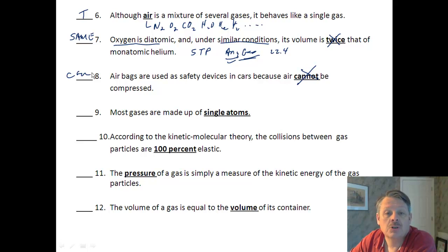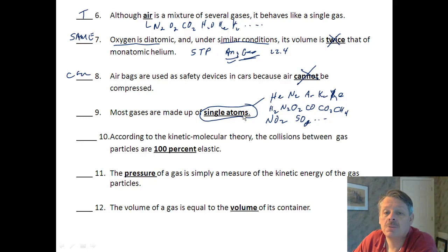Most gases—number nine—most gases are made up of single atoms. Well, that's certainly true. There are some gases made up of single atoms like helium, neon, argon, krypton, and xenon. That's five. Everything else are molecules. You've got H2, N2, O2, carbon monoxide, carbon dioxide, methane gas CH4, nitrogen dioxide NO2, sulfur dioxide SO2. There are bunches of gases. So actually, most gases are made up of multiple atoms.